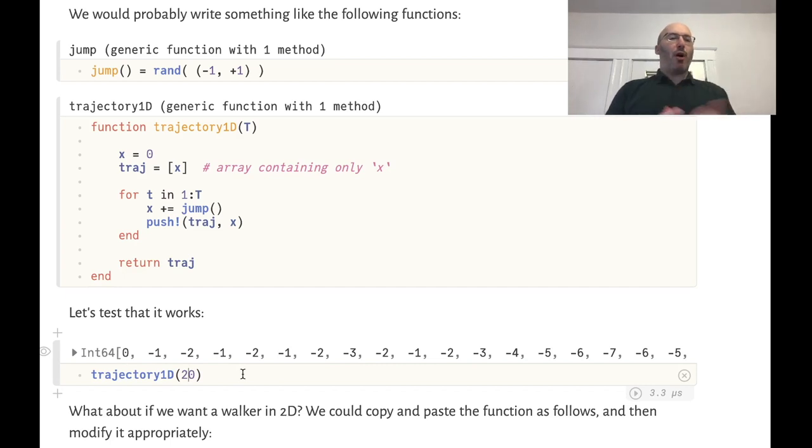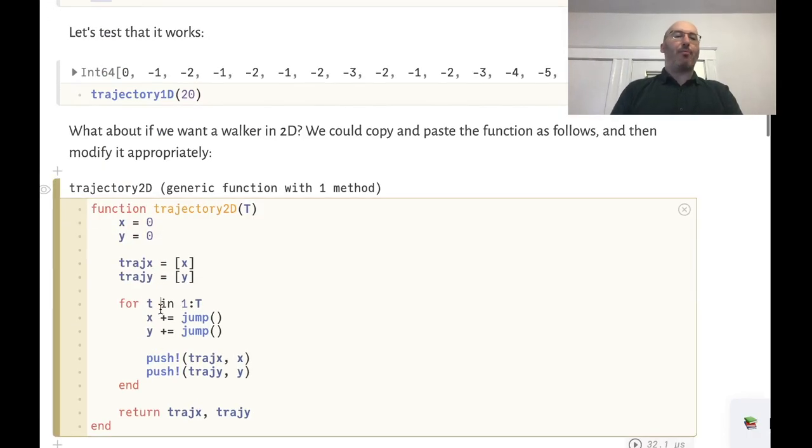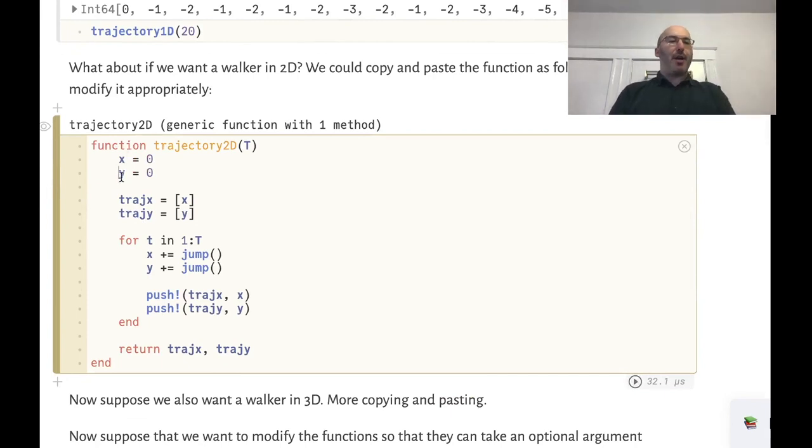But what if we want now a two-dimensional random walker that can jump in x and y? The obvious thing to do is to copy this code and paste it and modify it appropriately. So now we would have positions x and y, we would have coordinates x and y that we want to store.